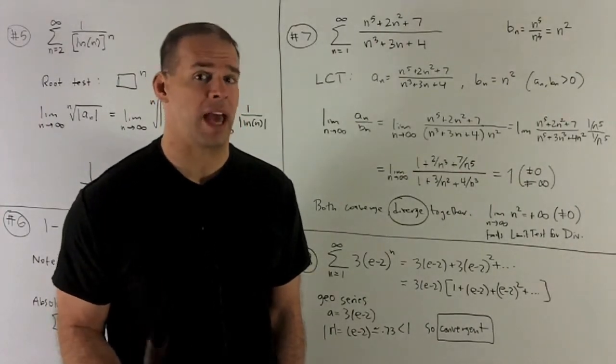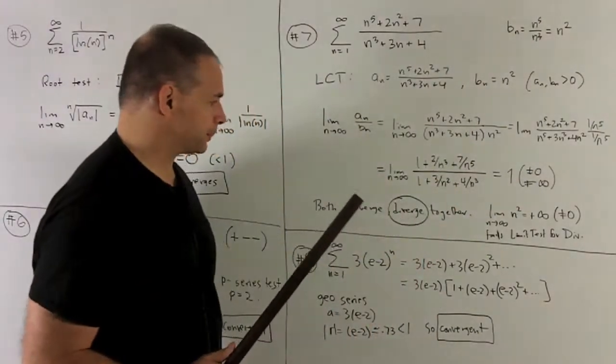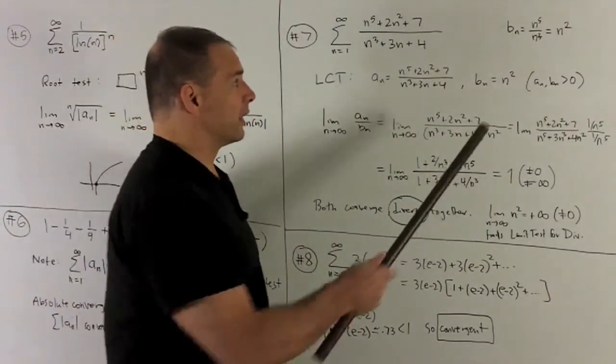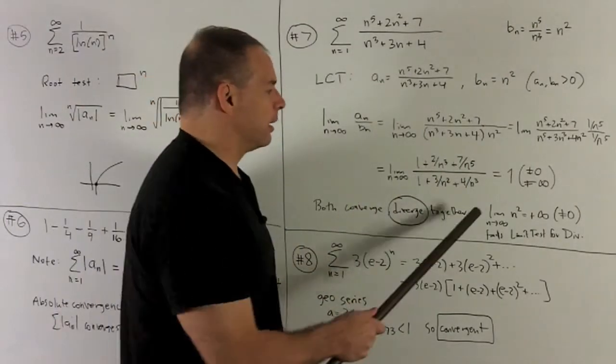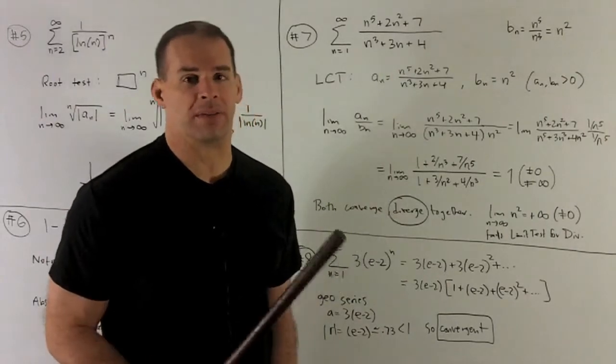So all I need to do now is check the convergence or divergence of bn. We know that this is going to diverge. Why? If I take the limit as n goes to infinity of n squared, that's going to be equal to plus infinity.